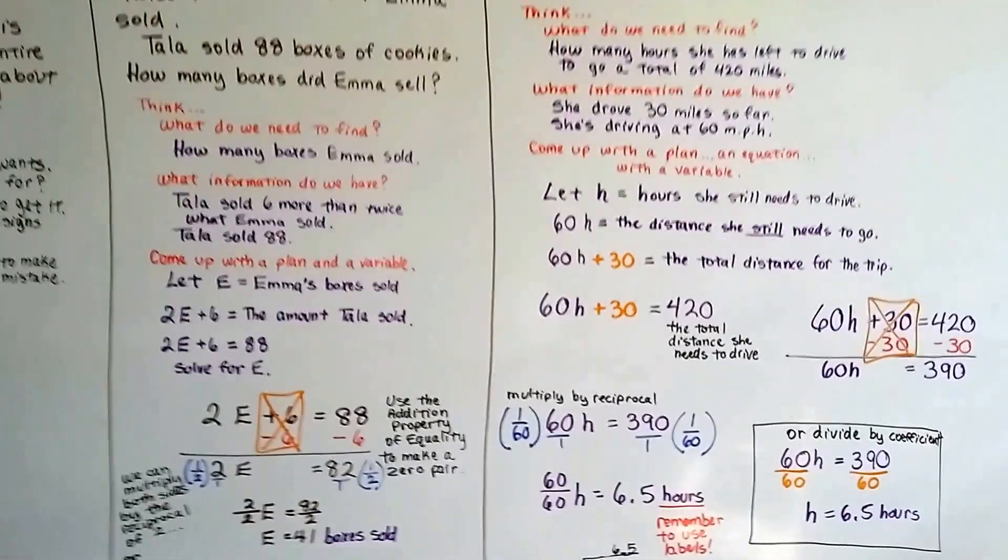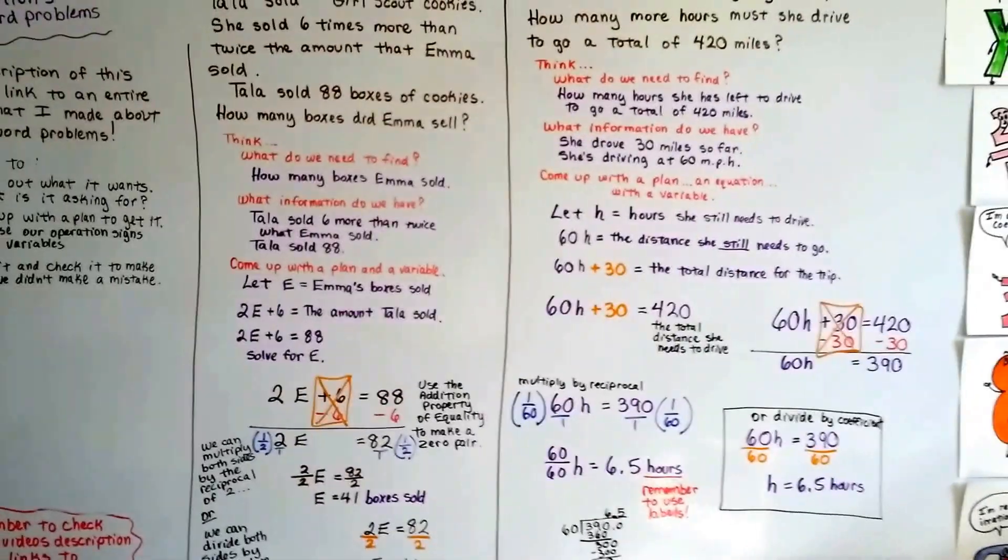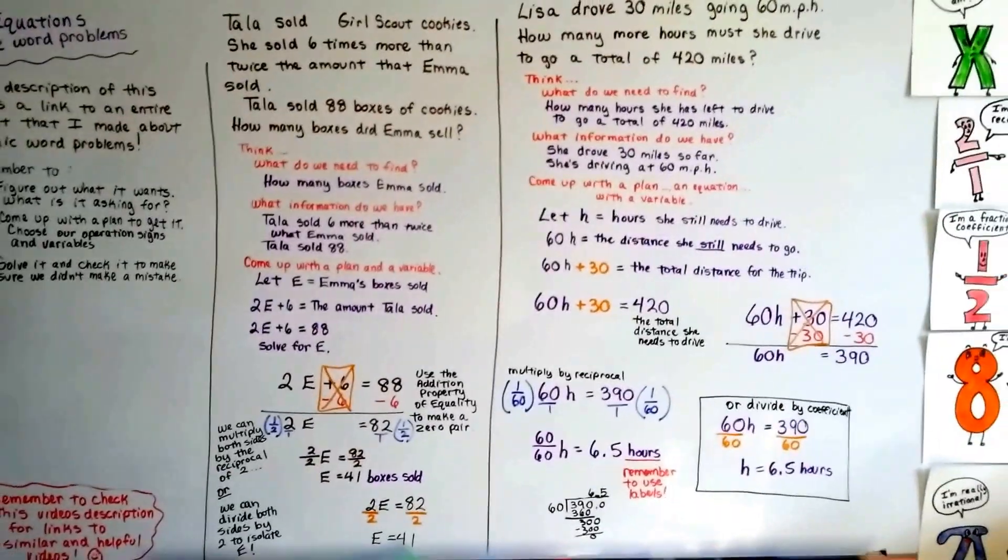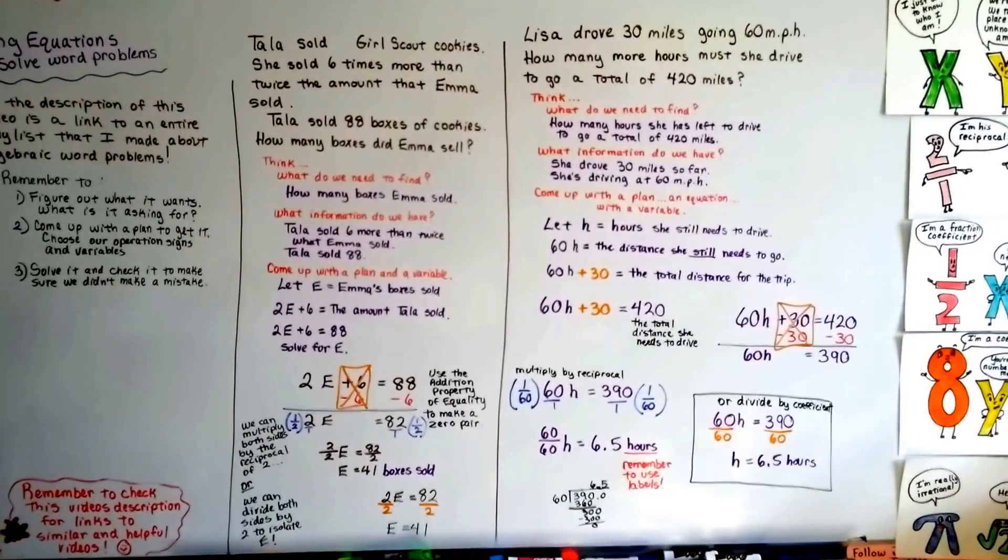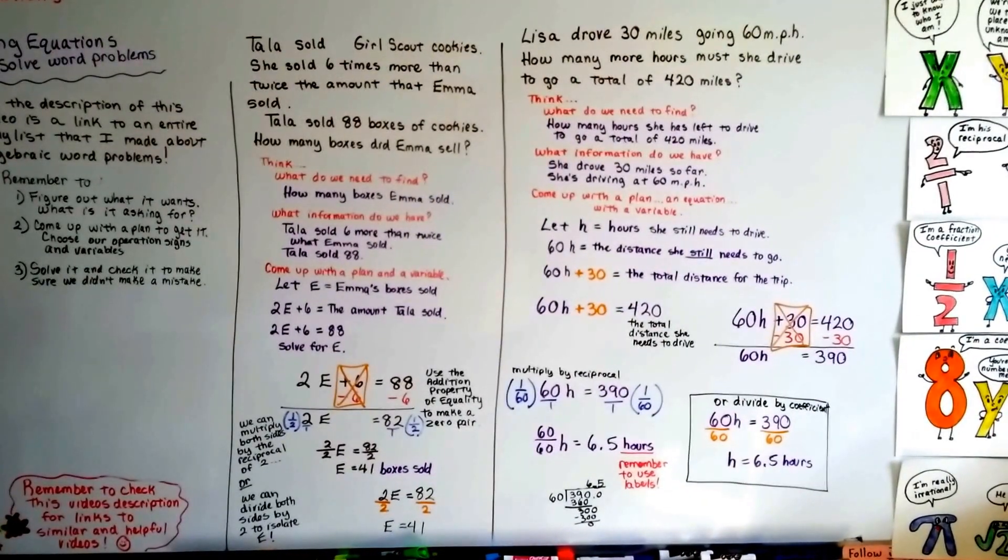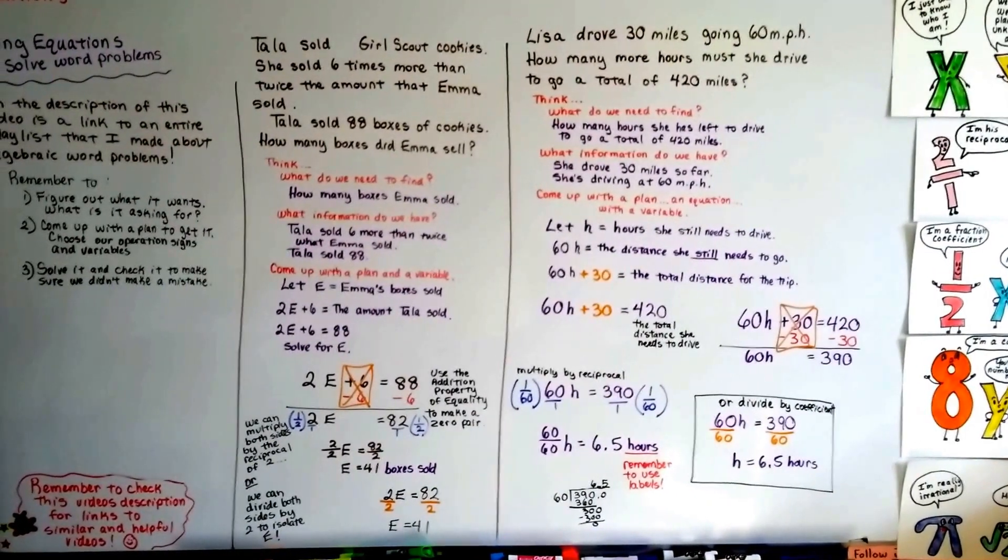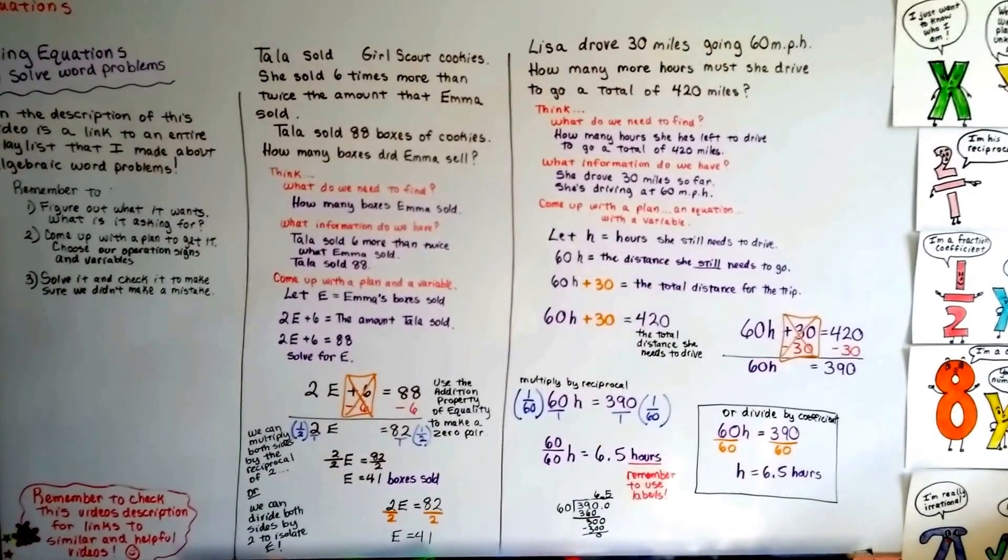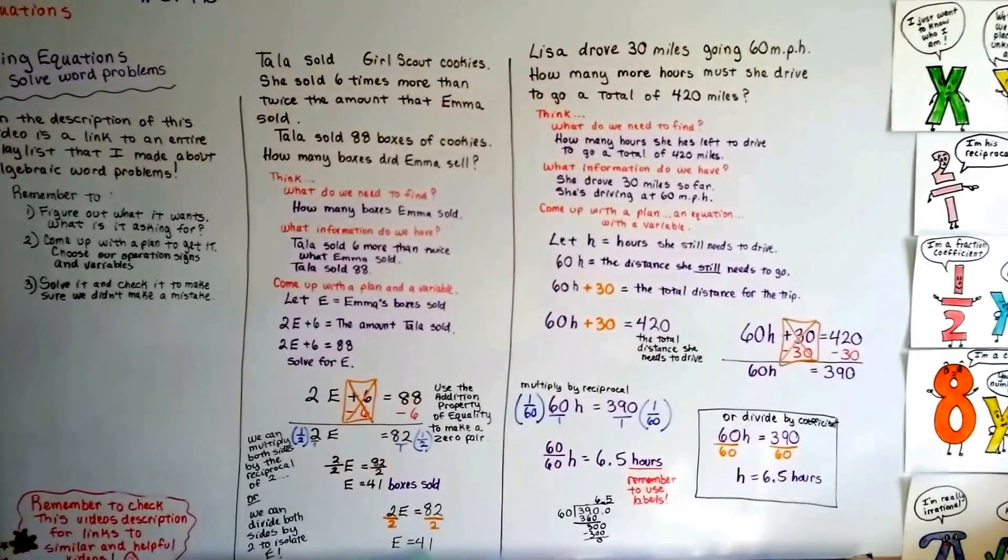Very important. And your teachers might get on you about that. So remember your labels. What are you trying to come up with a number for? The miles, the hours, the boxes of cookies, the bananas, the monkeys, whatever it is, put that label in.